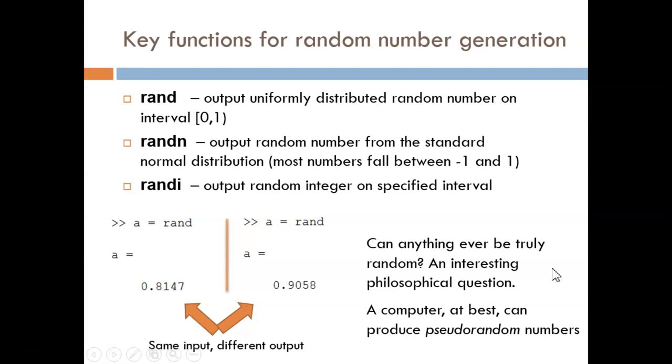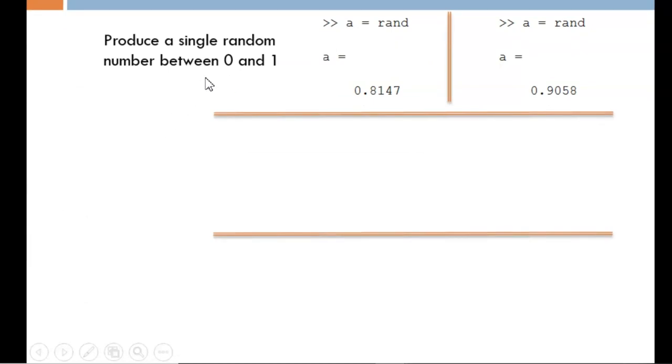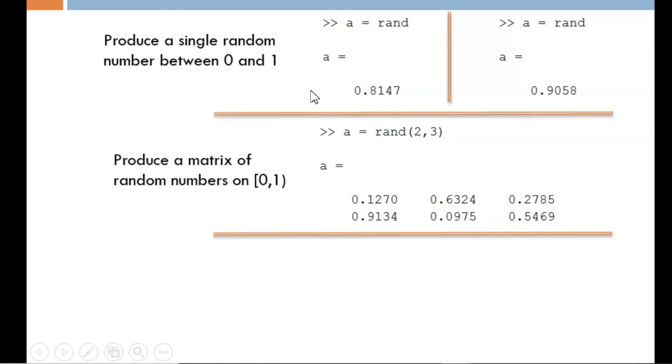At best, software, including MATLAB, can produce pseudo-random numbers. These are numbers that appear random to us as users, but there is a deterministic algorithm acting behind the scenes. The most basic use of the RAND function, with no input arguments, returns a single random number between 0 and 1. We can create a matrix of random numbers by including two input arguments, which define the requested number of rows and columns. In this example, we obtain a 2 by 3 matrix. Each of the values contained fall on the interval 0 to 1.